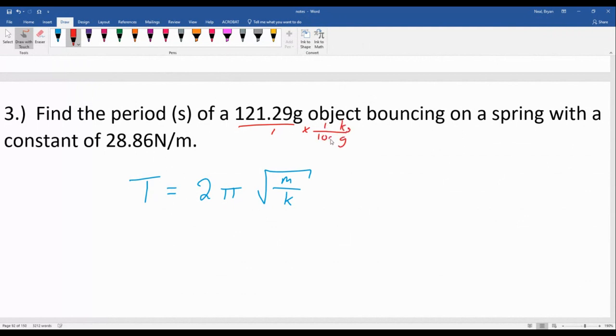You want to remember kilo or k means 1,000, and because the 1,000 is on the bottom, we're going to divide or shift to the left the decimal and get 0.12129 kilograms.